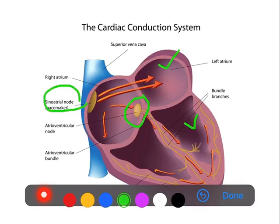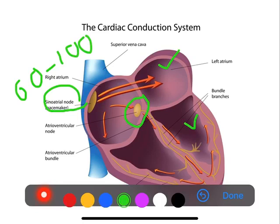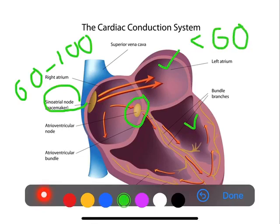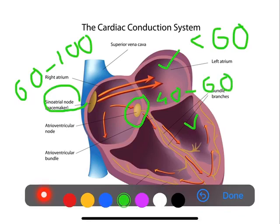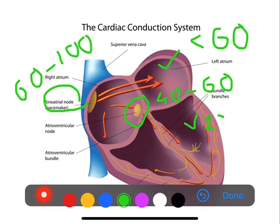As we go from above to the bottom, the rate of impulses produced decreases. The SA node produces impulses at a rate of 60 to 100 beats per minute. The atria produce impulses at less than 60 per minute. The AV node produces impulses at a rate of 40 to 60 per minute, while the pacemakers in the ventricle produce impulses at a rate of 20 to 40 beats per minute.